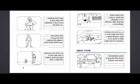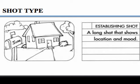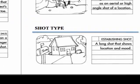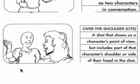Those are the different sizes of shots. Once you understand the different sizes, you usually combine them with a shot type. The shot size and shot type you choose will begin to tell your story in an interesting way. The first shot type is an establishing shot — a long shot that shows location and mood; many times the slug line of the script becomes the establishing shot. A two-shot is a medium or close shot wide enough for two people, often used to film a conversation. We then splice in different types of shots to bring that conversation to life. We will start with a two-shot and then go to an over-the-shoulder shot — a shot that shows us a character's point of view but includes part of that character's shoulder or the side of their head.